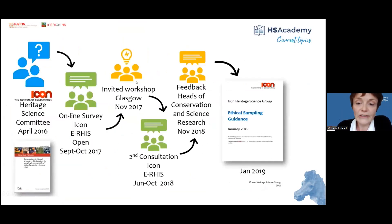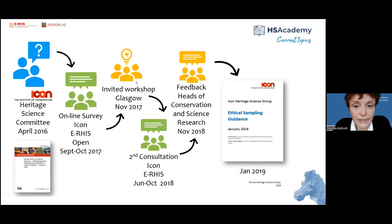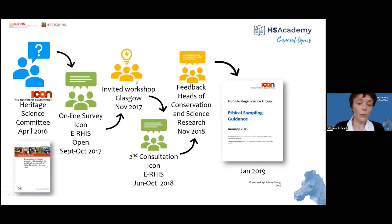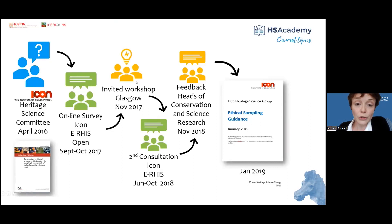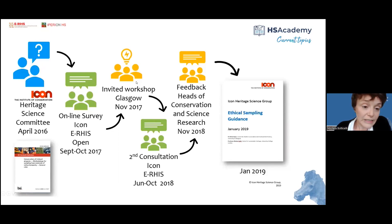In 2019, the Ethical Sampling Guidance was released, thanks to the work done by Anita Quye at the University of Glasgow and Matthias at UCL through the ICON committee. It summarized not only the British Standard but also the results of two different survey moments and a workshop held in Glasgow in 2017. It sets the principles for how sampling should be done, stressing that sampling should occur after discussion, and that the criteria for sampling should be fixed in a discussion involving all responsible parties — from scientist to conservator to artwork owner.